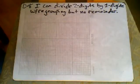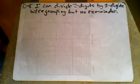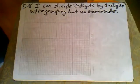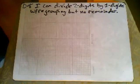Hey folks, this is Mr. Walsh and we are on target D8. I can divide a two-digit by a one-digit with regrouping but no remainder.